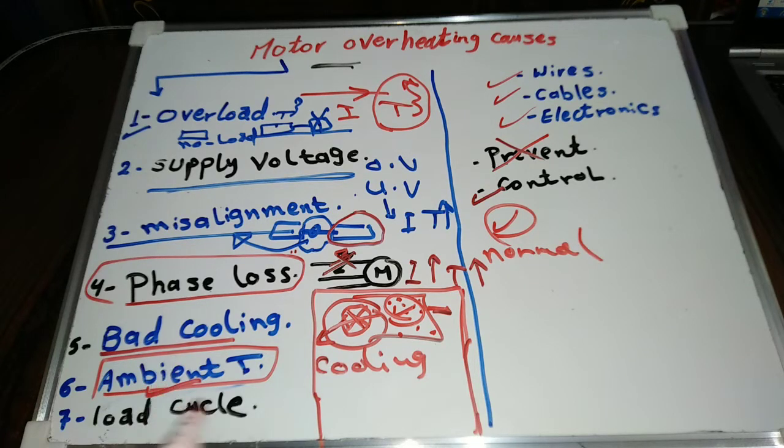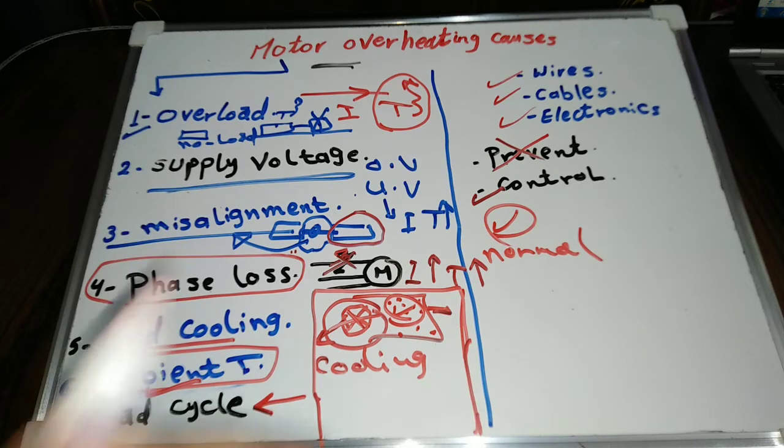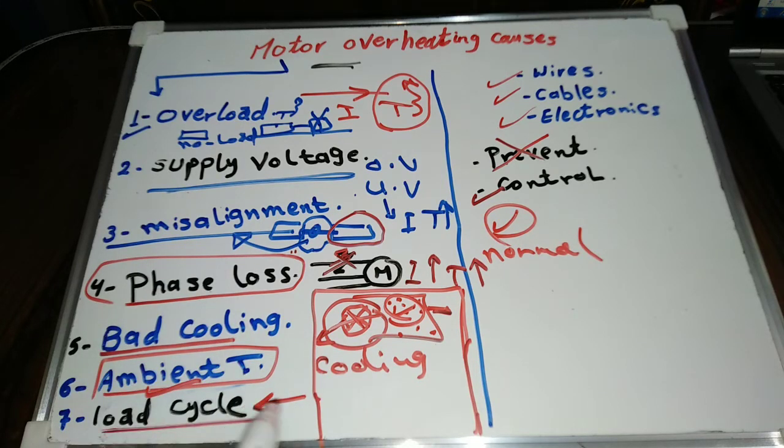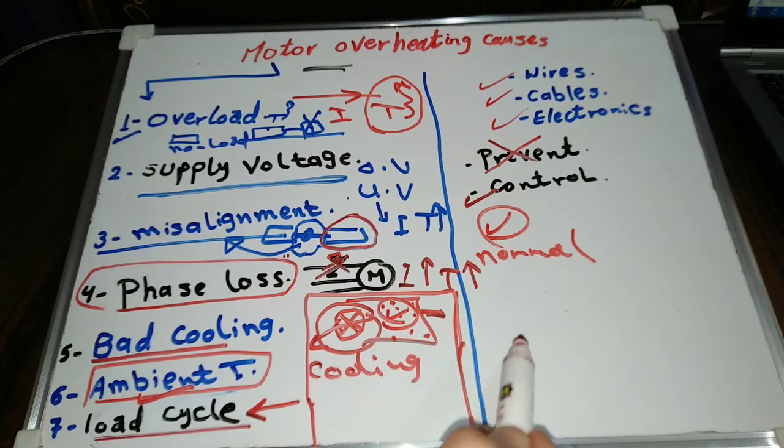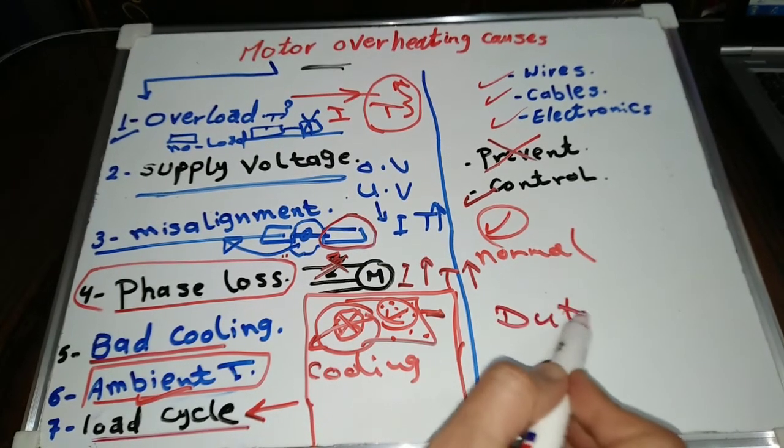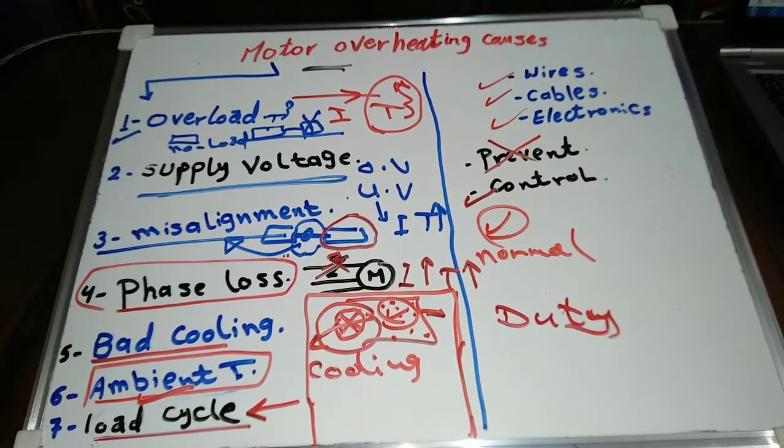Unsuitable motor for the load. If the motor power is suitable to the load, it's not enough to ensure that the motor will not overheat. Besides the motor power, you should take into account the load cycle or load duty cycle, which means the periods of the load.